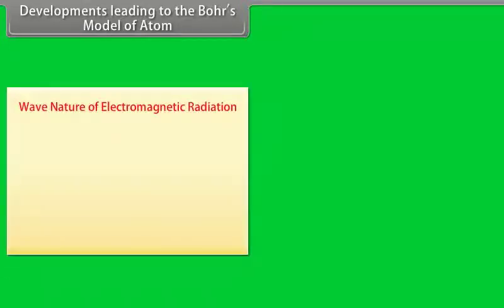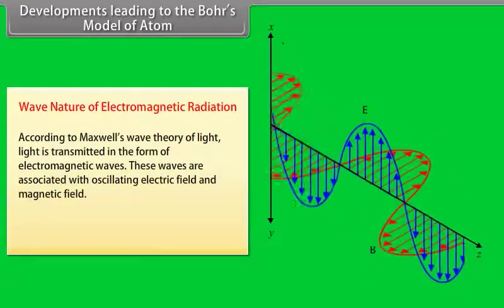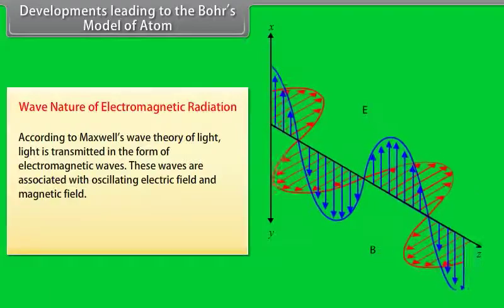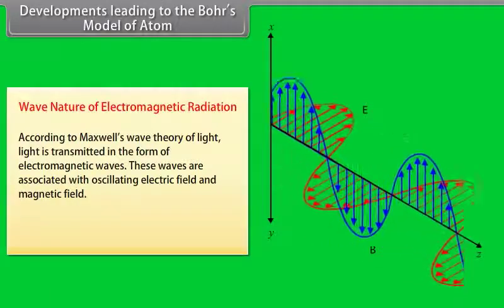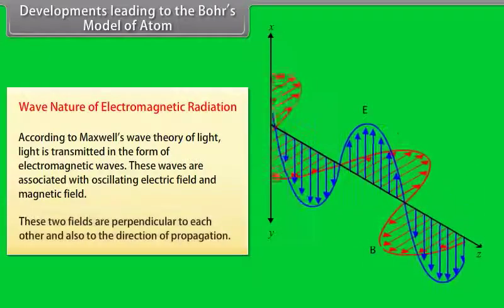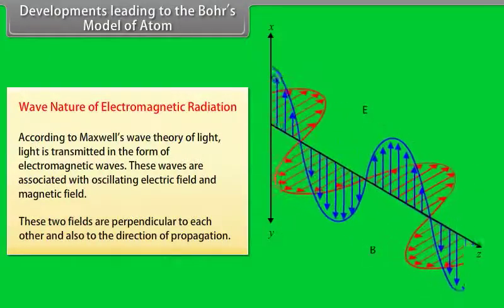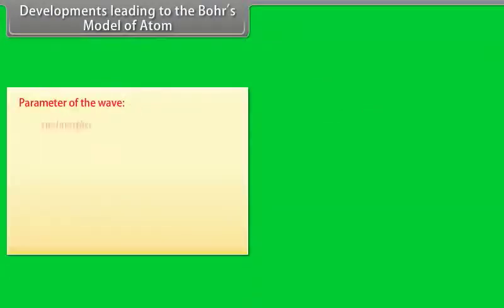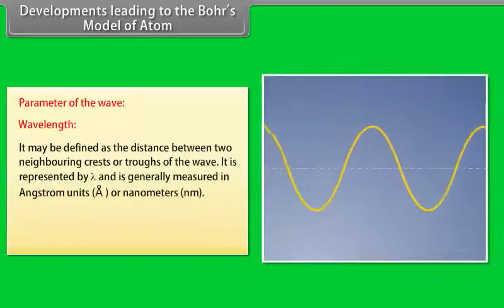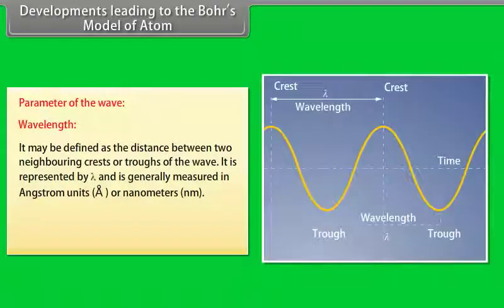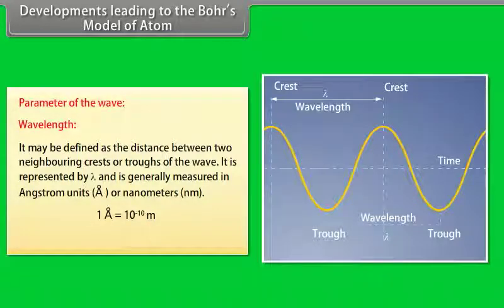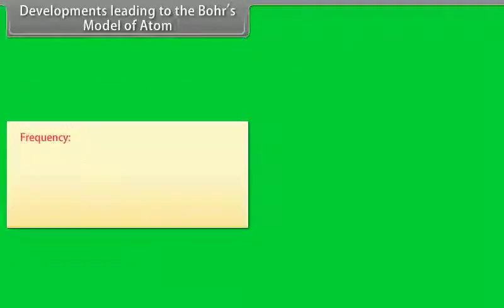Developments leading to Bohr's model — Wave nature of electromagnetic radiation: According to Maxwell's wave theory, light is transmitted as electromagnetic waves associated with oscillating electric and magnetic fields perpendicular to each other and to the direction of propagation. Wavelength (λ) is the distance between two neighboring crests or troughs, measured in angstroms or nanometers: 1 Å = 10⁻¹⁰ m; 1 nm = 10⁻⁹ m.